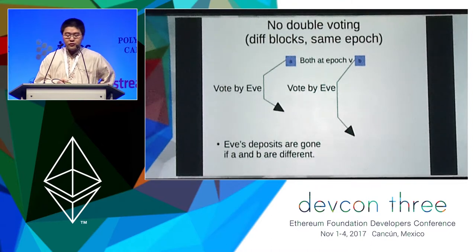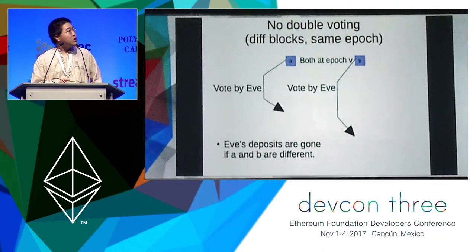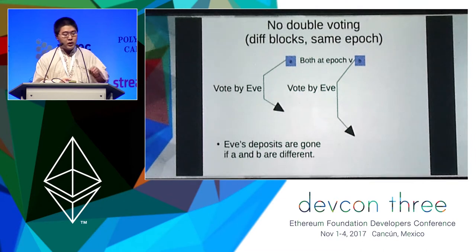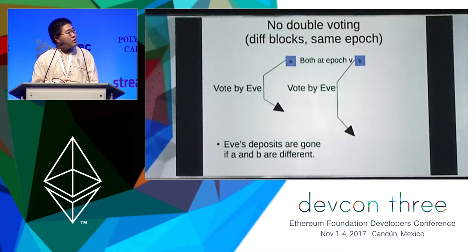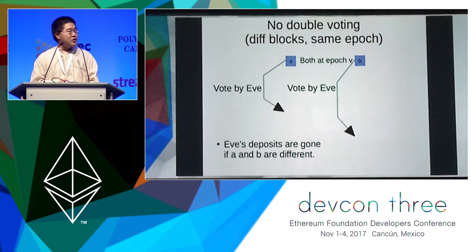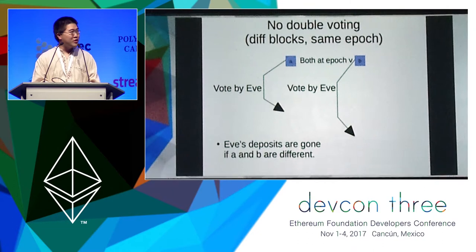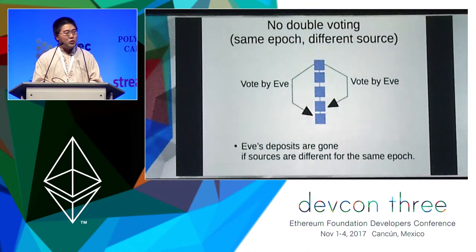There are rules for validators. The validators cannot do certain things; otherwise, they will be slashed. One rule says no double voting. When Eve, a validator, votes for two different blocks on the same epoch, Eve's deposits are gone — Eve is slashed. It's kind of intuitive: you cannot support two contradictory things.